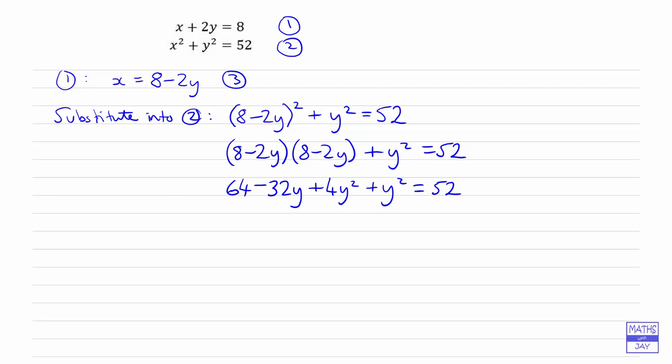We're aiming to write this as something times y squared plus something times y plus a constant equals 0, and then we're hoping to be able to factorize the quadratic. So 4y squared plus y squared is 5y squared, then we're taking away 32y, and then we've got plus 64. But on the other side we've got 52, so we're going to take 52 away from both sides. That will give us plus 12 and equals 0.